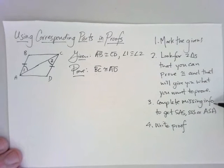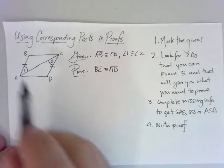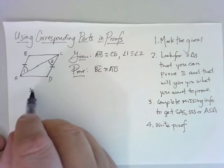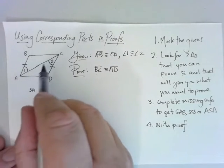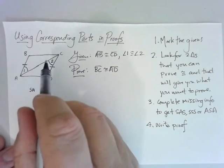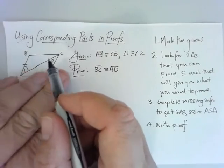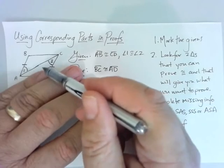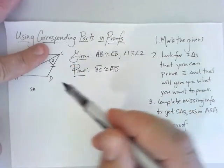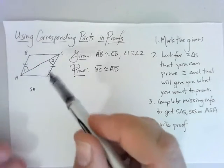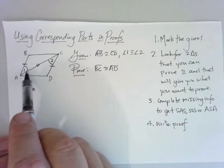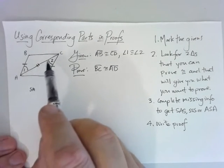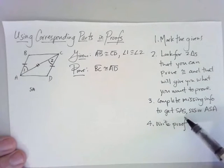Step 3: complete the missing information to get SAS, SSS, or ASA. Looking at what I have tick-marked, I have a pair of sides and a pair of angles — so I have SA. I'm either going to do SAS or ASA. It's very common in these problems for two triangles to share a segment that is a side for both. If I cover up the bottom triangle, AC is a side of the top triangle; if I cover up the top, AC is a side of the bottom. That's a shared segment — it has to be congruent to itself.